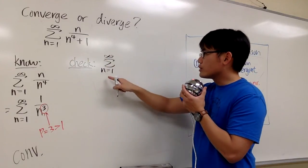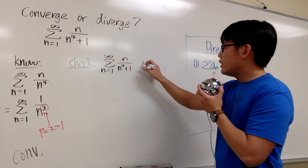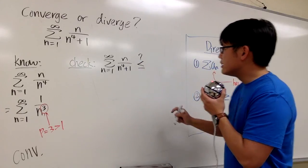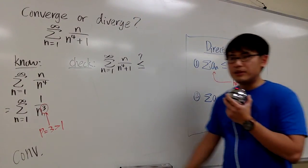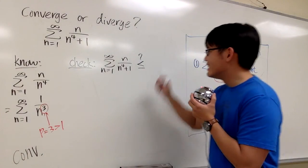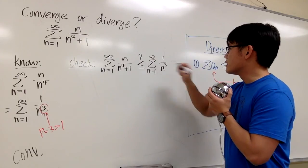This is the series that we want to check if it converges or not. Sigma when n goes from 1 to infinity, n over n to the fourth power plus 1. We want to know if this is smaller or equal to a known convergent, namely we're going to use that one. Sigma when n goes from 1 to infinity, 1 over n to the third power.